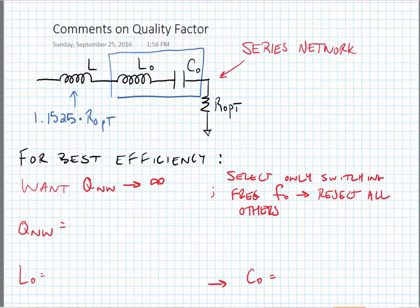Now we know that our network quality factor is given by the following. In this case, we're not doing any impedance transformation, so it's just the series resonant quality factor or the reactance divided by the resistance. Now from this, we can find the value of the inductance in the series resonant network and capacitance in the series resonant network given Q_network and R_aught.